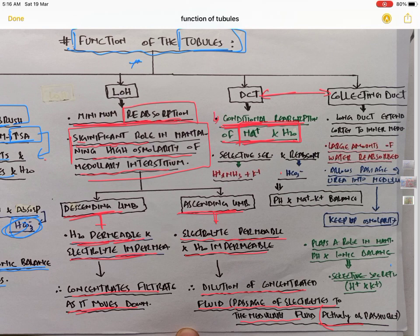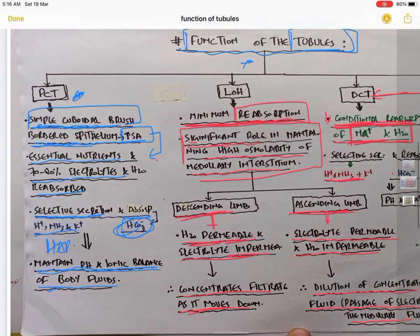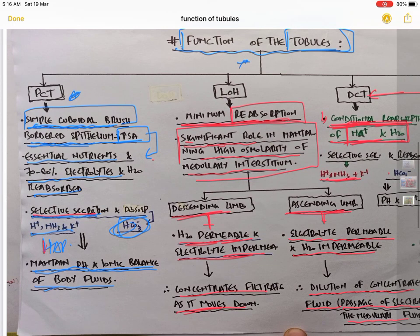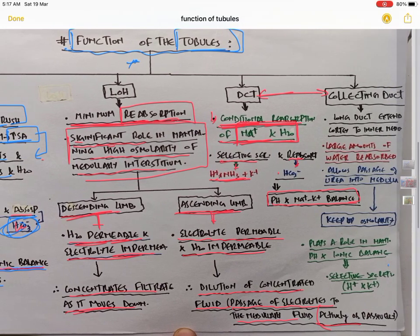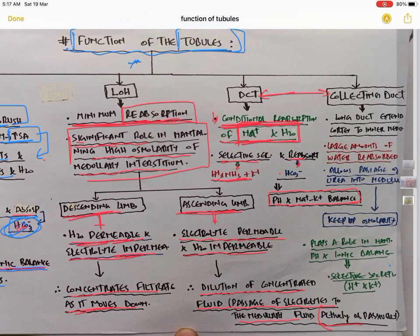DCT also has a secretion function similar to PCT — selective secretion of H+ and reabsorption of bicarbonate — which is responsible for maintaining pH and sodium-potassium balance of body fluids. The last part is the collecting duct.